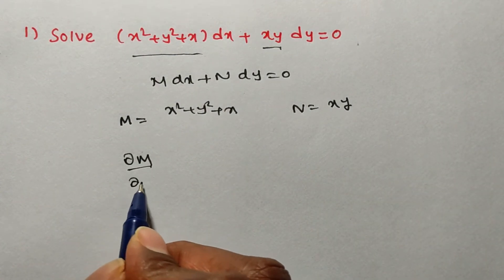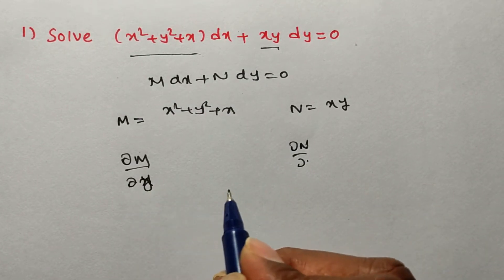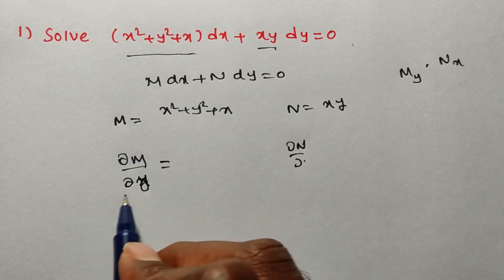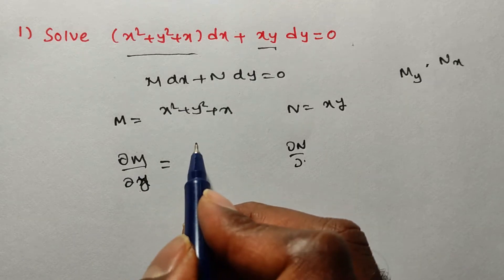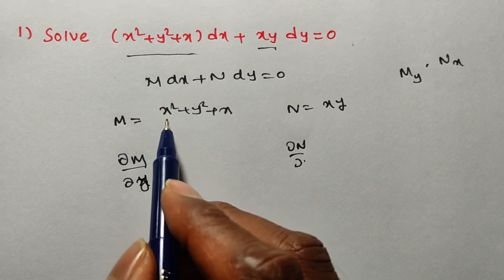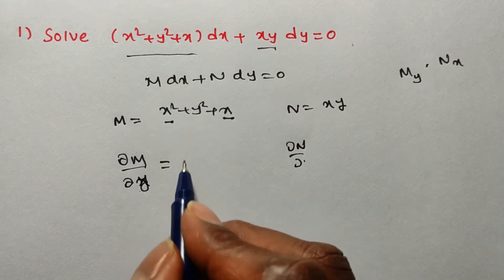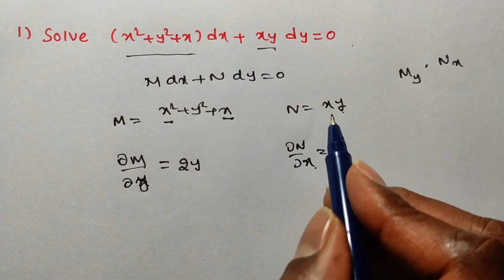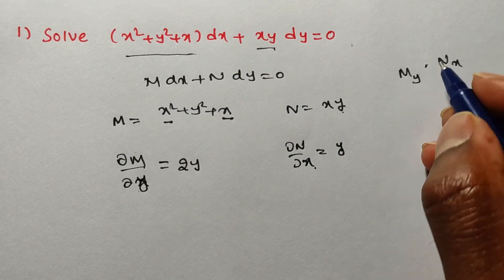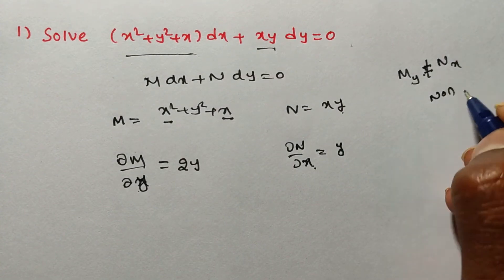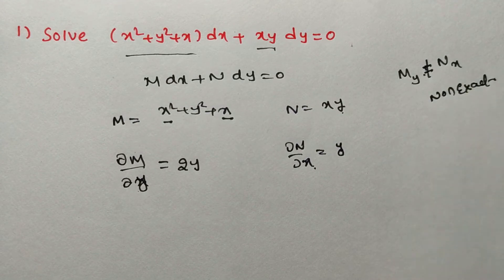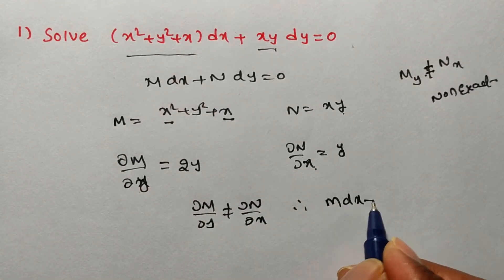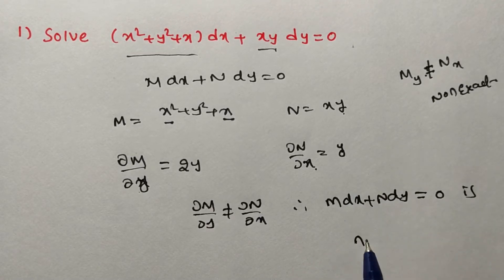We have to verify whether the given differential equation is exact or non-exact. We find ∂M/∂y and ∂N/∂x. Differentiating M partially with respect to y, treating all other variables as constants: x² and x are independent of y, so their derivatives are 0. The y² term gives 2y. So ∂M/∂y = 2y. For ∂N/∂x: y is constant, so derivative of xy with respect to x is y. Since ∂M/∂y ≠ ∂N/∂x, the given differential equation M dx + N dy = 0 is non-exact.